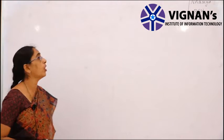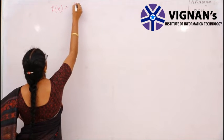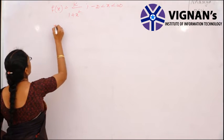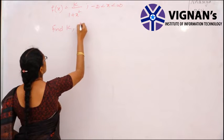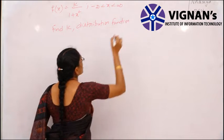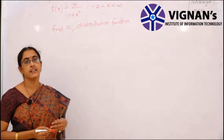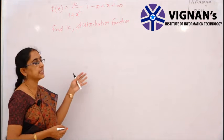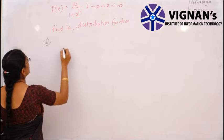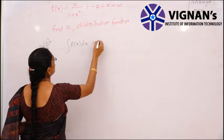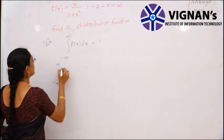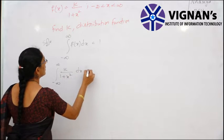Now let us go to the second problem. A continuous random variable has density function f(x) = k/(1+x²) for −∞ < x < ∞. Find the value of k and also the distribution function.